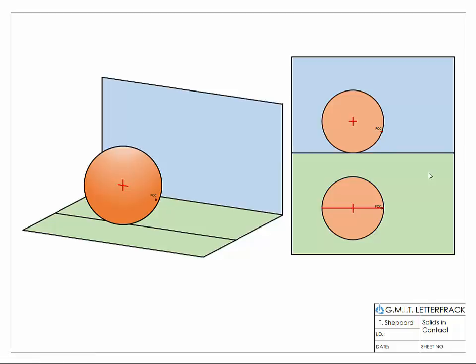First, we're going to use our point of contact as a checker. When using the loci method, you generally have one condition which you use to check whether your solution is correct. In this example, we take our center, join it through our point of contact, and we know from our previous videos that our center has to be somewhere along this line. So the solution we're looking for has to have its center on this checker line here.